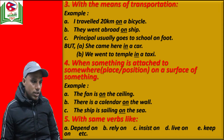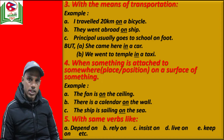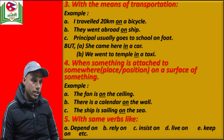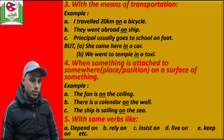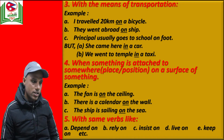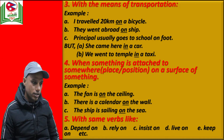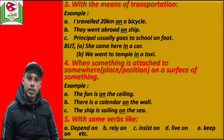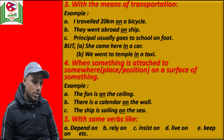The next condition where we use preposition 'on' is with the means of transportation. For example: I travel 20 kilometers on a bicycle. They went abroad on a ship. Our principal usually goes to school on foot. So we say on ship, on bicycle, on foot. However, there are exceptions — in the case of a car and a taxi, we use preposition 'in'. For example: she came here in a car. We went to temple in a taxi.